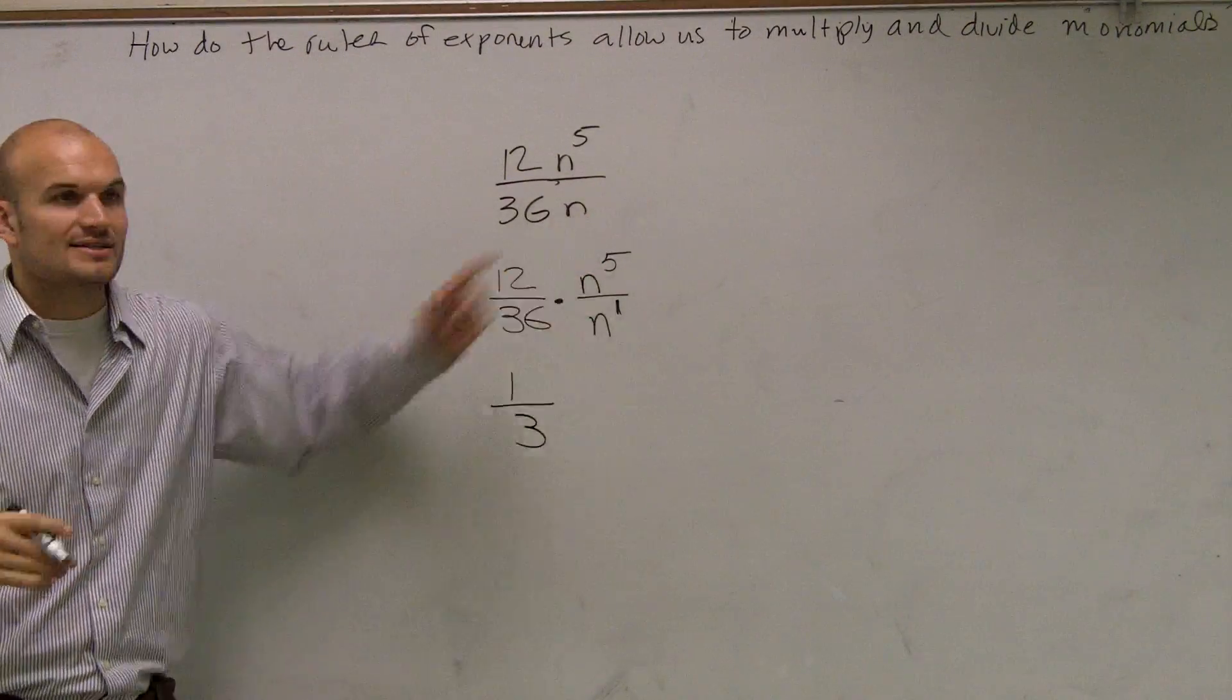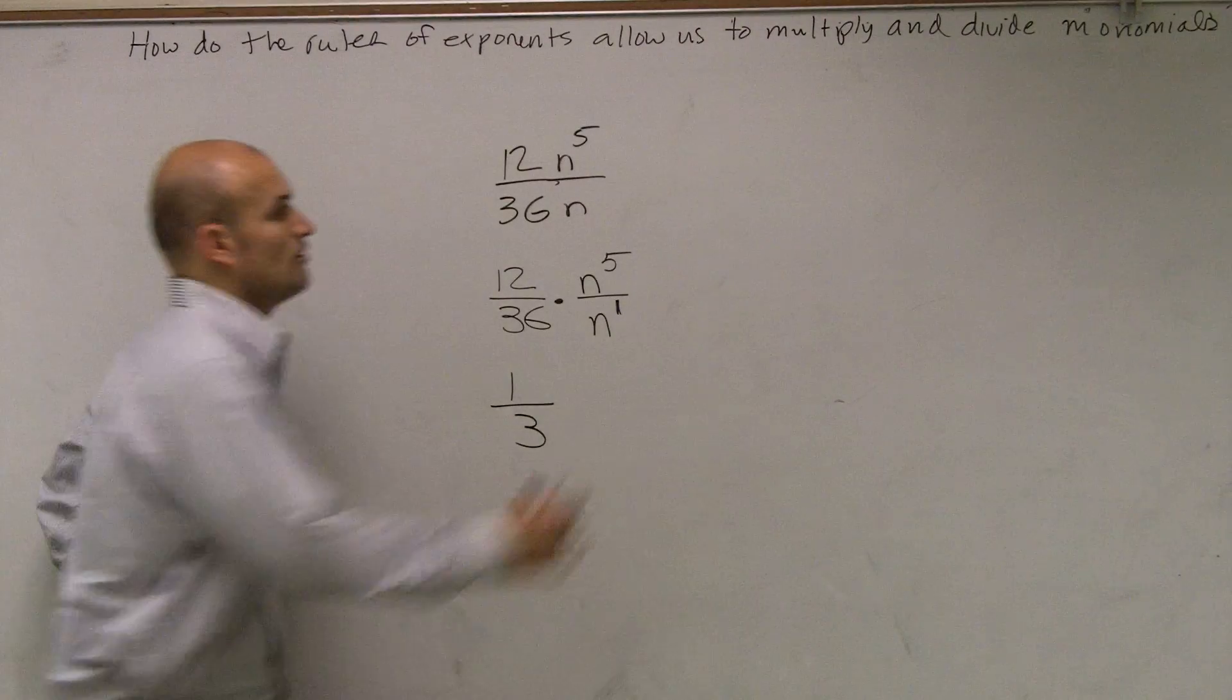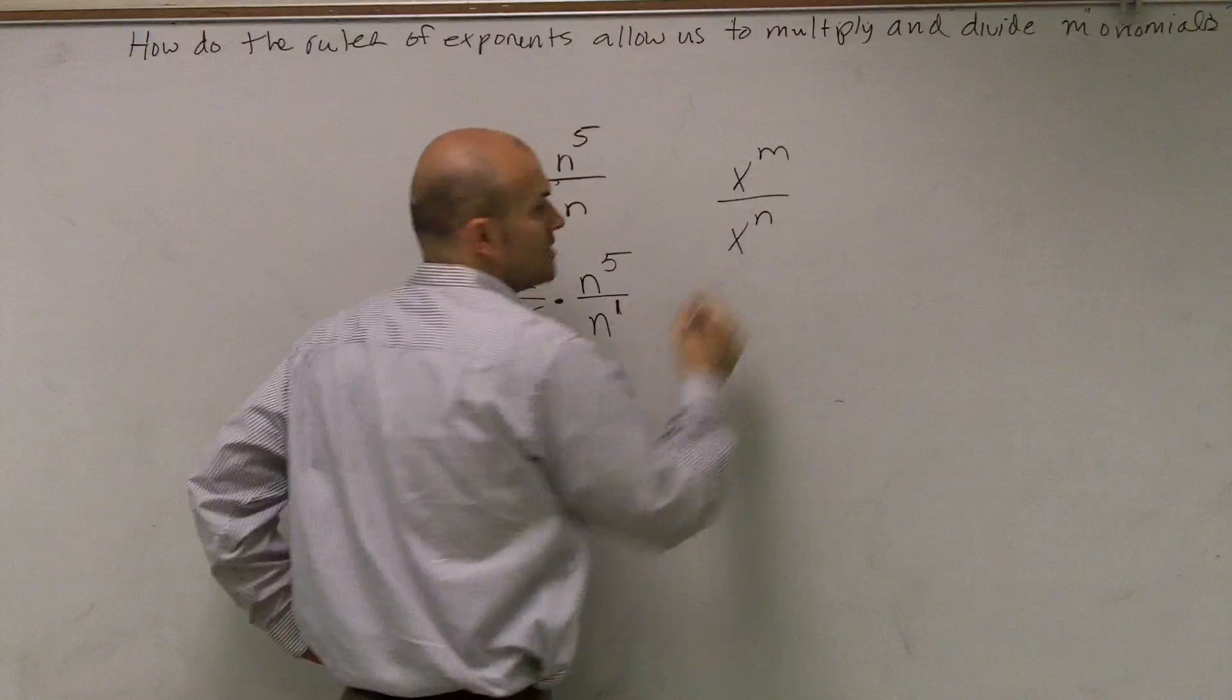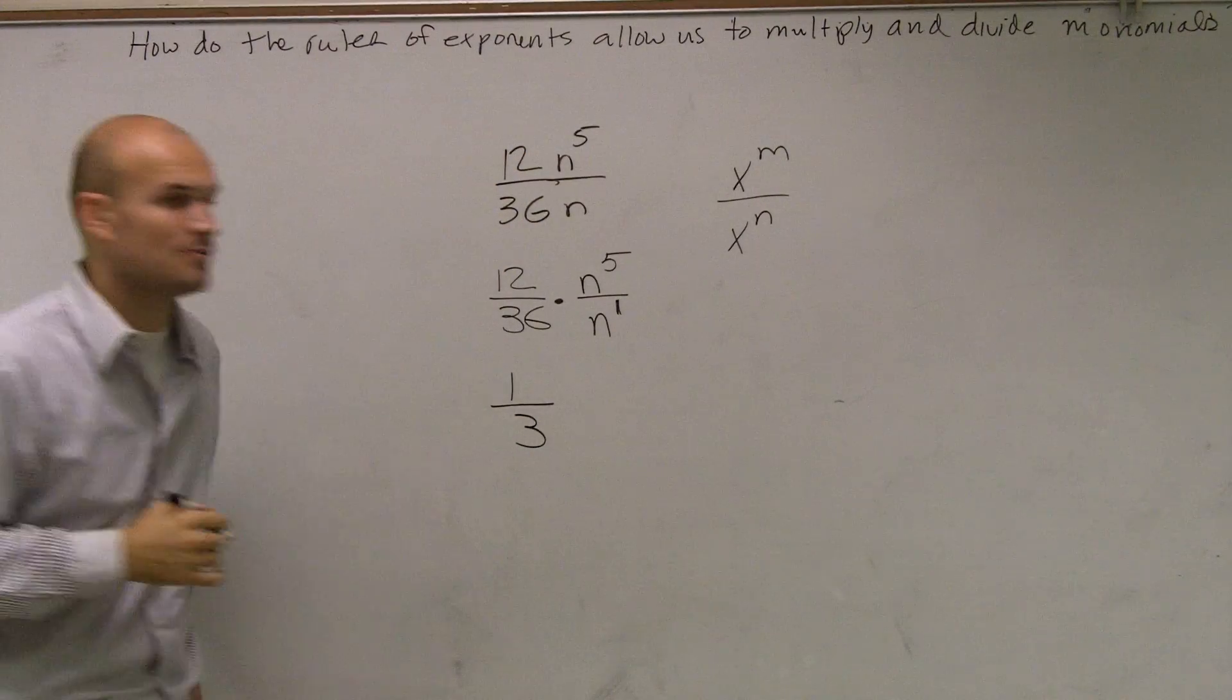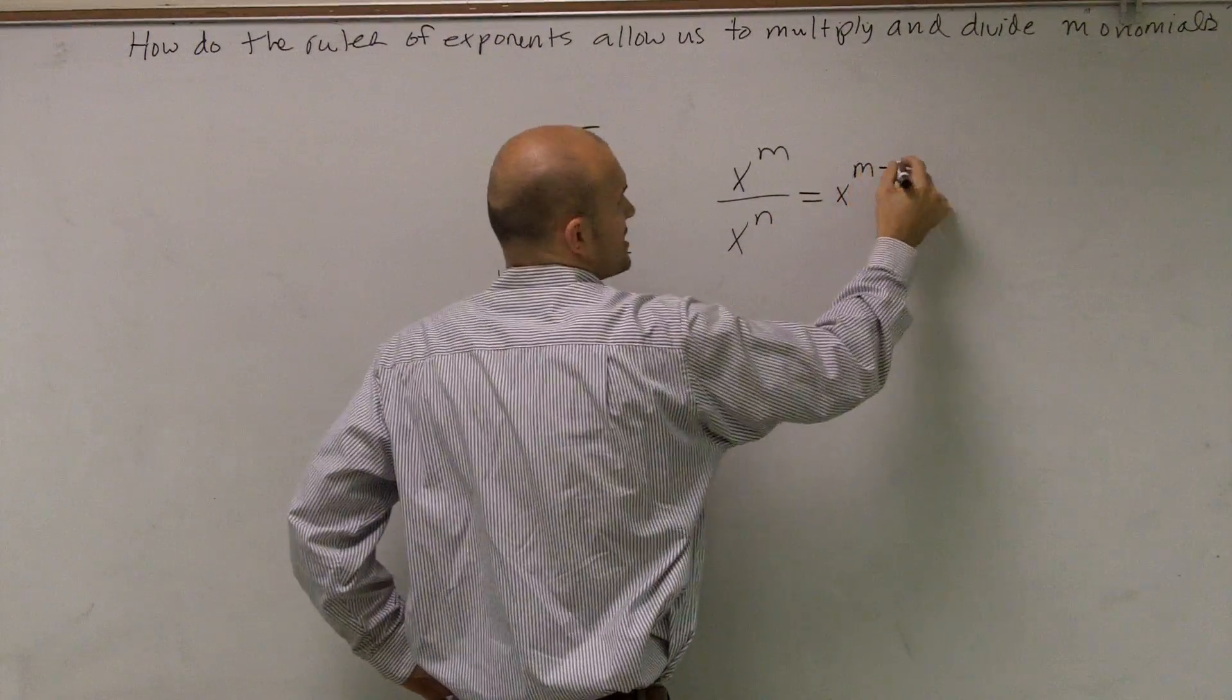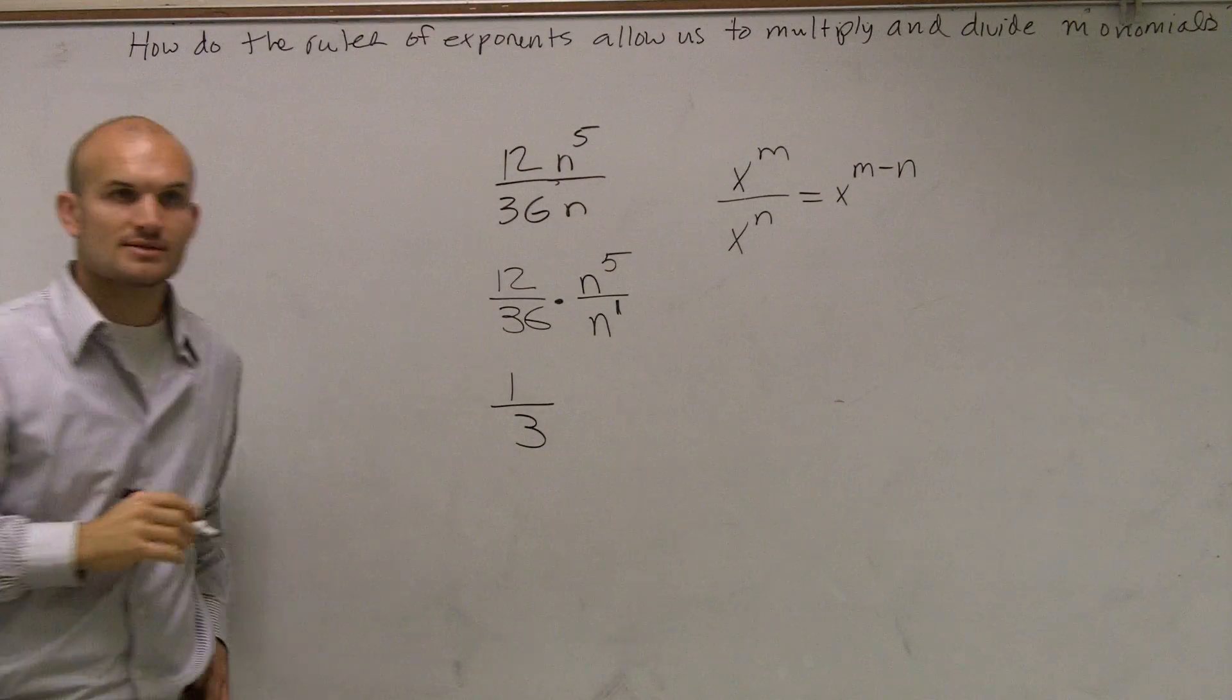Then how do I do n to the fifth divided by n to the first? Well, remember, our rule of exponents stated: whenever you have two numbers that have the same base with exponents, to divide them, all you do is just subtract the exponents.